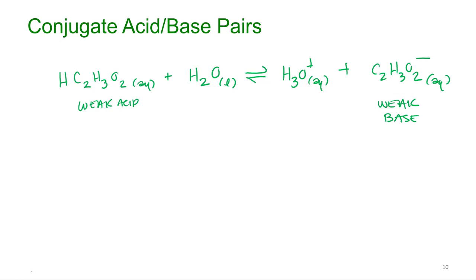So those are what is known as conjugate acid-base pairs. So if you have a weak acid, after it donates that proton, whatever it becomes is a base, because it can accept that proton back to form the protonated acid again.